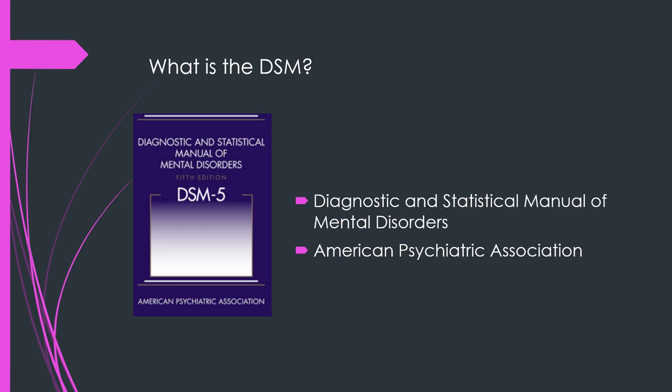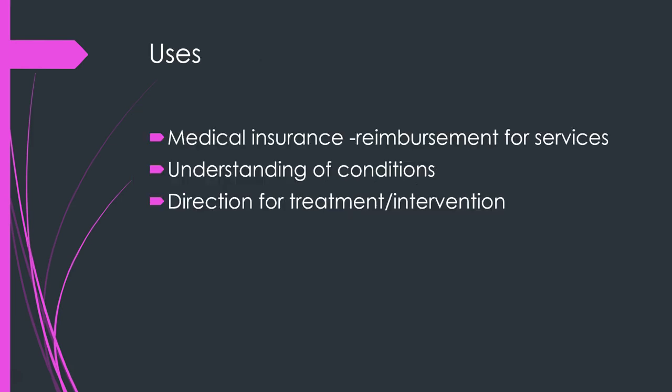The DSM is the Diagnostic and Statistical Manual of Mental Disorders, published by the American Psychiatric Association. It's currently in its fifth edition and is mostly used here in the US. The number one use of the DSM is for medical insurance reimbursement — for example, a private practice therapist seeking reimbursement from Blue Cross Blue Shield will need a diagnosis using DSM codes. It also helps provide understanding of conditions for clients and mental health practitioners and provides direction for treatment and intervention.